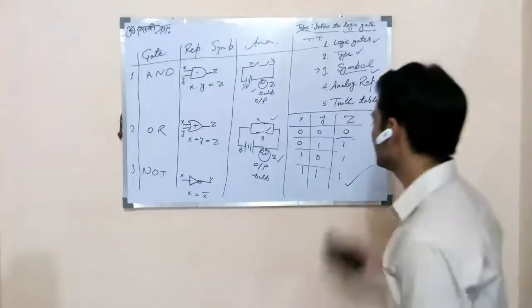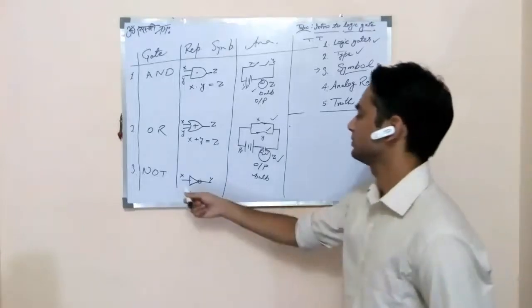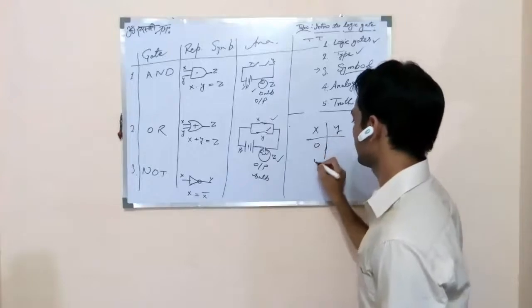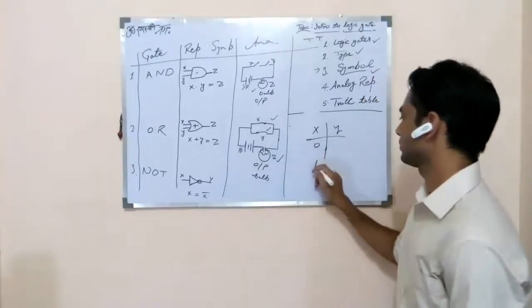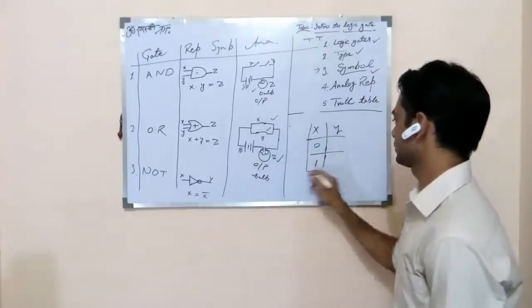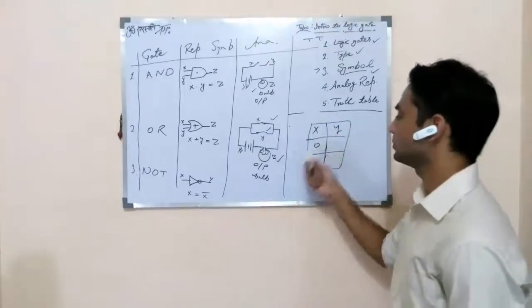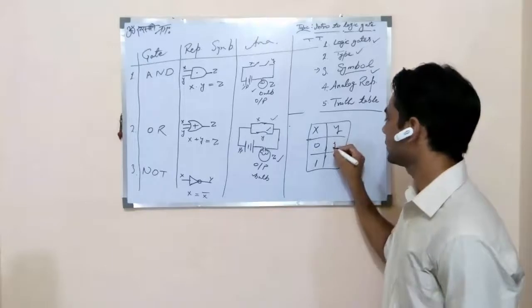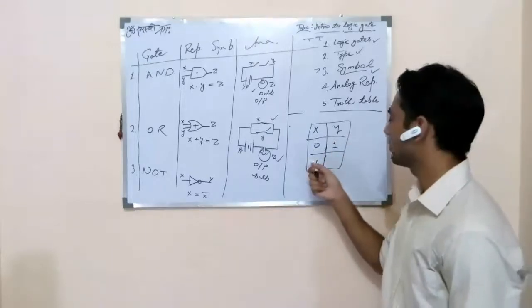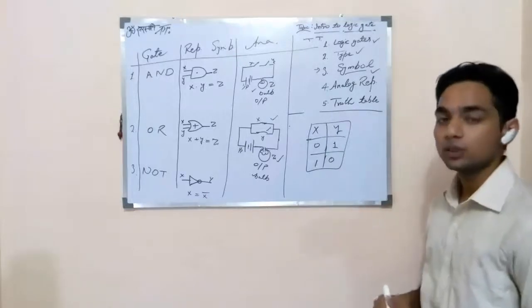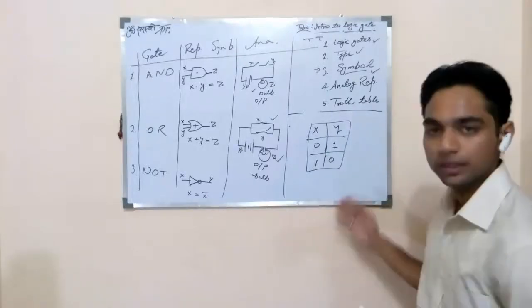Last but not least. NOT gate. One input symbol. X, 1, 0, or 1. If we apply 0 on NOT gate, then output is 1. And if we apply 1 on NOT gate, then output is 0. So, this is the truth table of NOT gate.